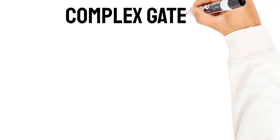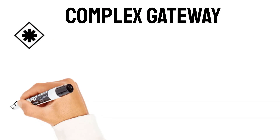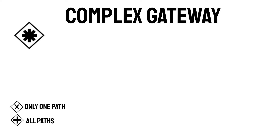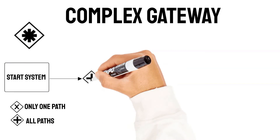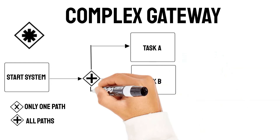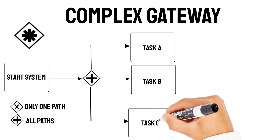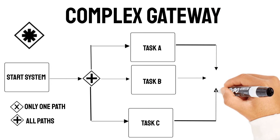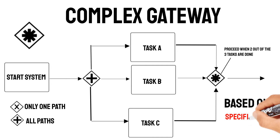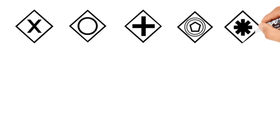Let's jump to the complex BPMN gateway. The either-or described that only one path is valid, and the parallel gateway described that all paths have to be finished. The complex BPMN gateway is called complex because we can specify the logic every time we use it. For example, let's say we start a computer system. This system would now do some tasks in parallel — let's call these tasks A, B, and C. With the parallel gateway, the next steps would only be conducted when all three tasks are done. But let's say we already want to do another task as soon as two out of the three tasks are done — this is how we can use a complex BPMN gateway. This gateway is based on specification, which makes it very powerful but also a bit complex. Which one of the BPMN gateways have you already used, and which ones are you going to use more often now?